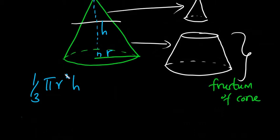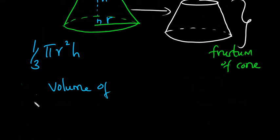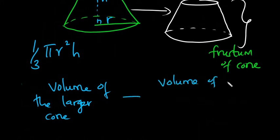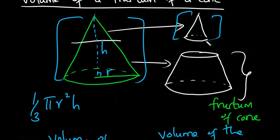As you can see, we have one big cone, and then we are cutting it into two, and we are going to have a smaller cone. The part that remains is known as a frustum. So you already have a glimpse of the formula: it's going to be the volume of the larger cone minus the volume of the smaller cone. So when we subtract the volume of the smaller cone from the volume of the larger cone, we are going to be left with the volume of this frustum.